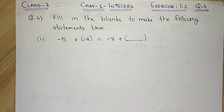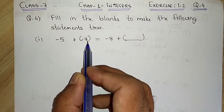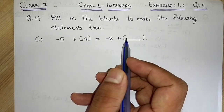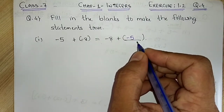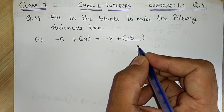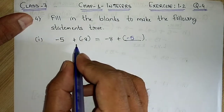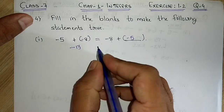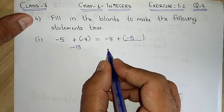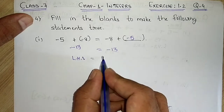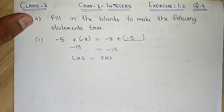A similar pattern is given here: minus 5 plus minus 8 equals minus 8 plus ___. Since minus 8 is written first, we write minus 5 in the blank, applying the commutative property for addition. Verifying: minus 5 plus minus 8 gives minus 13, and minus 8 plus minus 5 also gives minus 13. So LHS equals RHS, and the answer is minus 5.